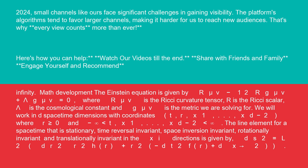The line element for a spacetime that is stationary, time reversal invariant, space inversion invariant, rotationally invariant, and translationally invariant in the x_i directions is given by ds² = L² dr²/(r² h(r)) + r² (-dt² f(r) + dx²).